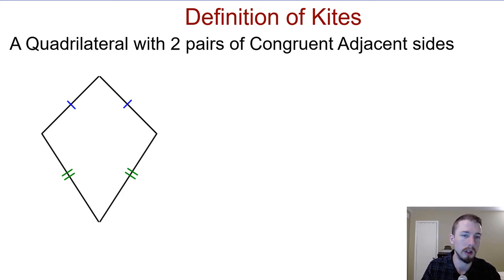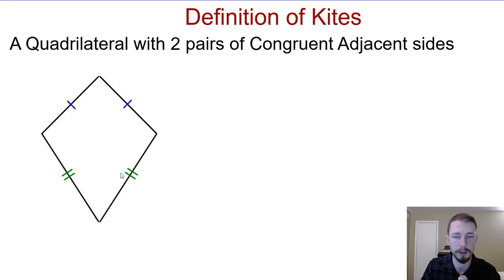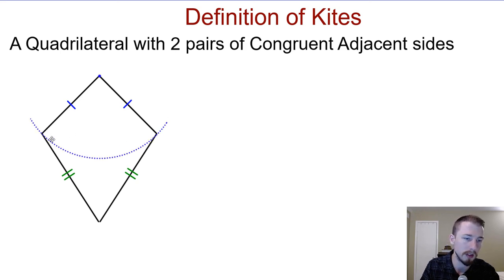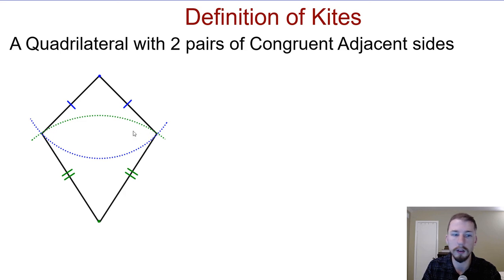We define a kite as a quadrilateral with two pairs of congruent adjacent sides. If you notice, these two sides on the top are congruent and the ones on the bottom are congruent as well. It looks kind of like a rhombus except that two sides are allowed to be longer than the other two sides. We can actually construct this by swinging the top two sides with the compass and then swinging the bottom two sides as well. Where those two intersect would be the lengths for the other side, giving us this kite here.